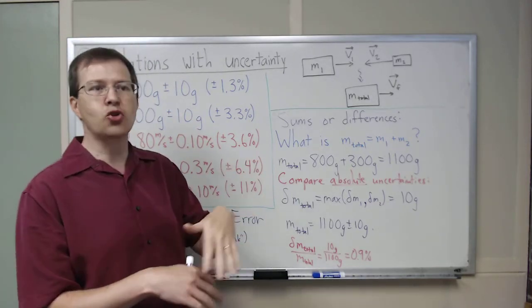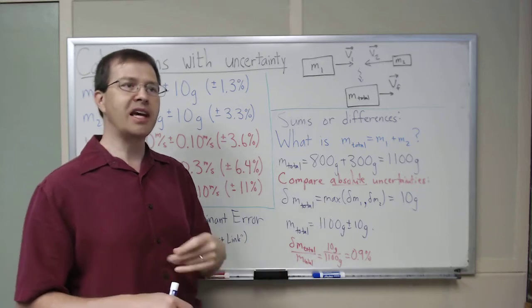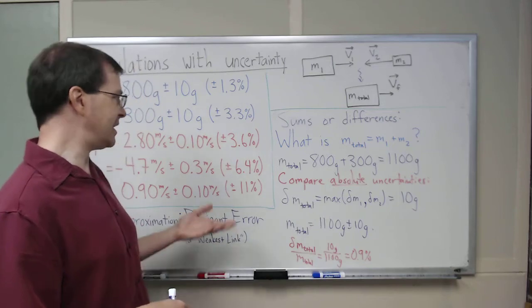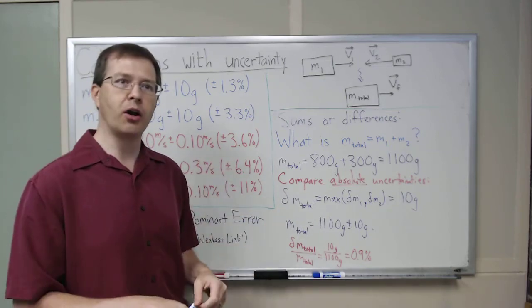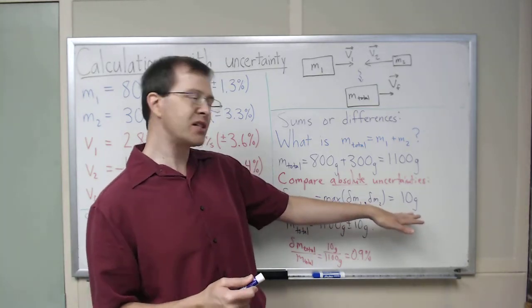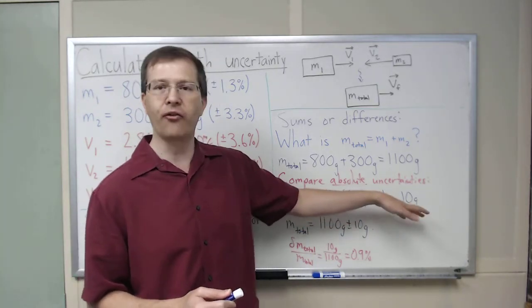But that's just because these are equal in size. As soon as one of the uncertainties is even just twice as big as the other, you can barely even notice the difference between the dominant error method and the professional way of doing error propagation. So this is sort of the least good it will be. It's an underestimate of the uncertainty, but it's still close. 10 compared to 14 grams is pretty close.